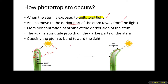There will be more auxins that move to the darker place, while the lighter side will remain with fewer auxins. You must mention that there will be a higher concentration of auxins at the darker side of the stem. Because the auxins have moved away from the light, they accumulate at the darker side, resulting in a high concentration — more auxin molecules — at the darker side.